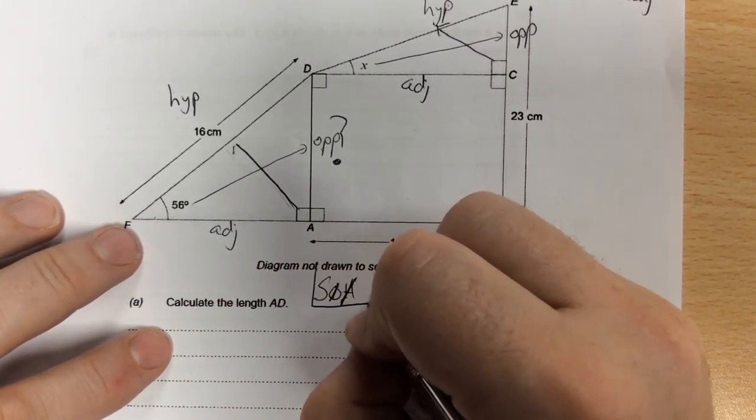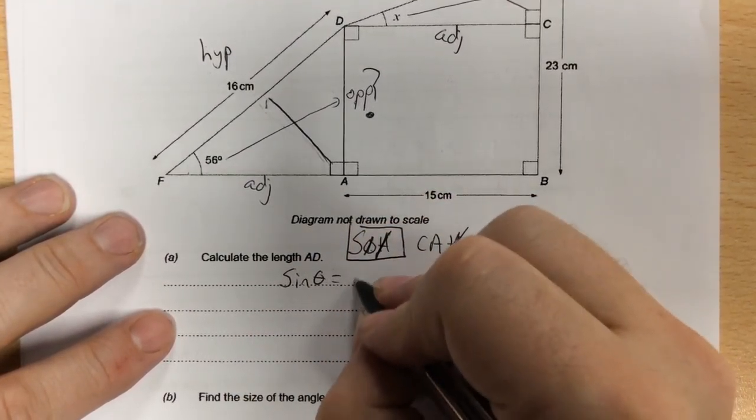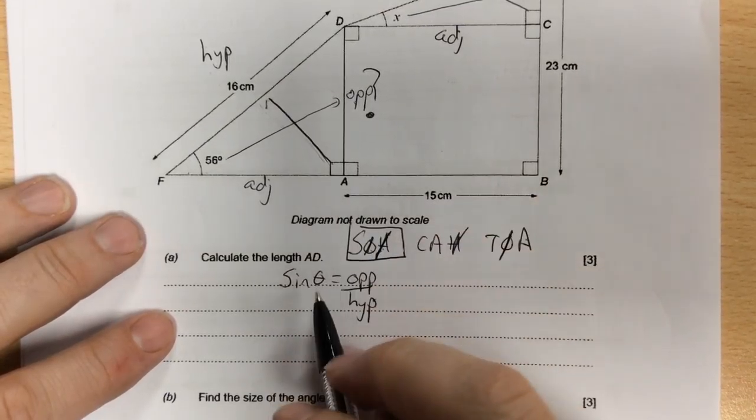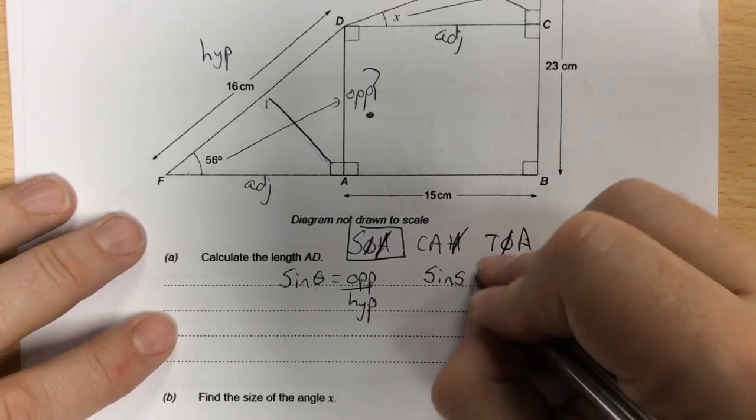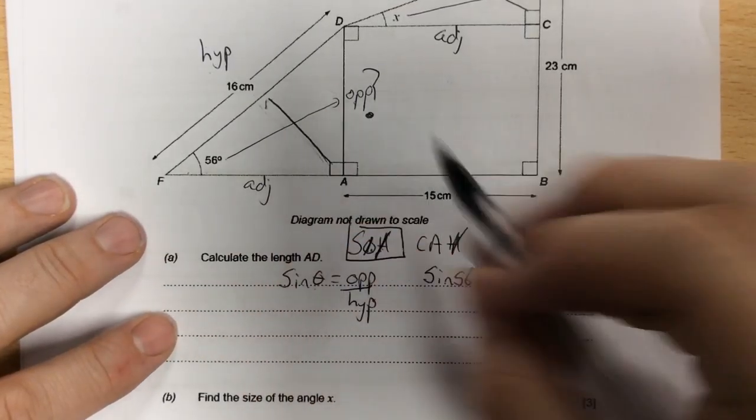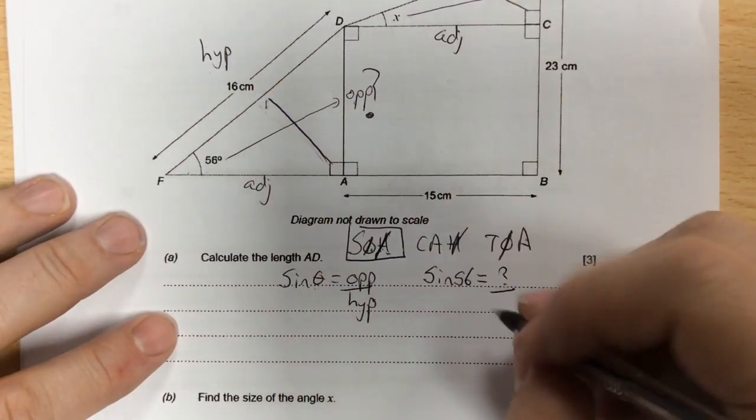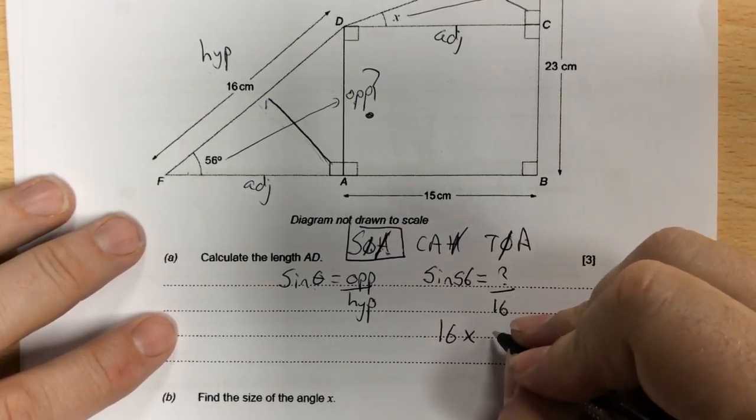The one with H and O ticked off is SOH. Theta is the angle, in this case 56 degrees, so sine 56 equals O for opposite, which I'm finding, divided by H, which is 16. The opposite of divide by 16 is times 16, so I'm doing 16 times sine 56.